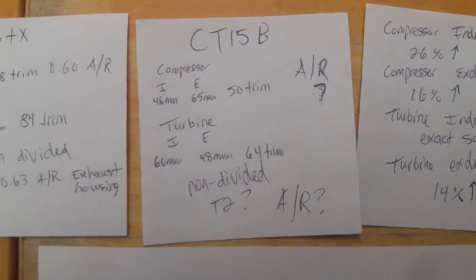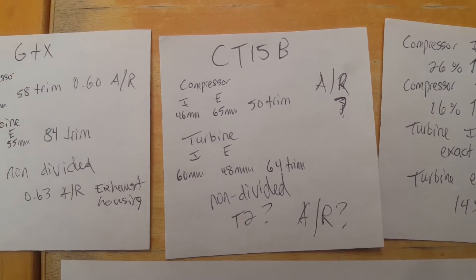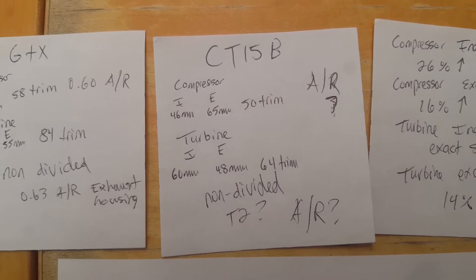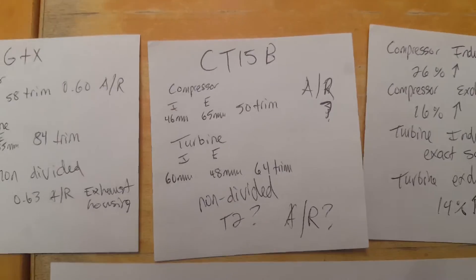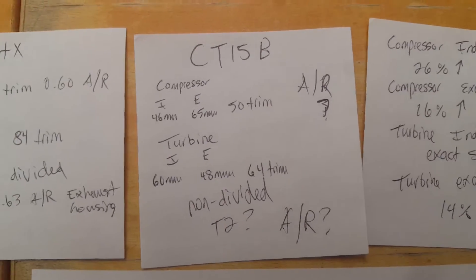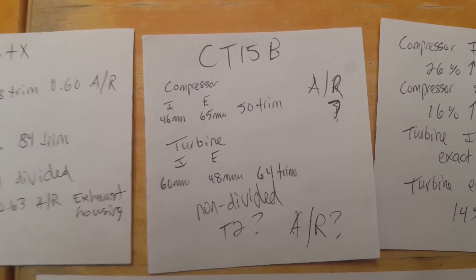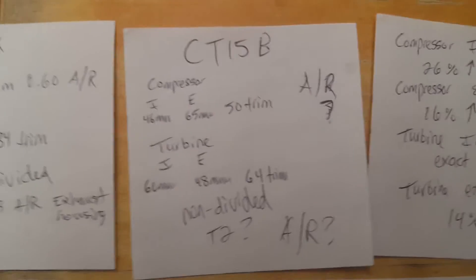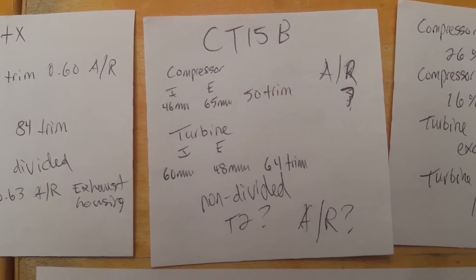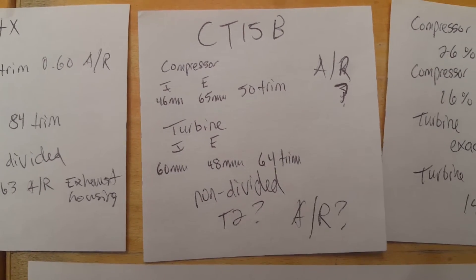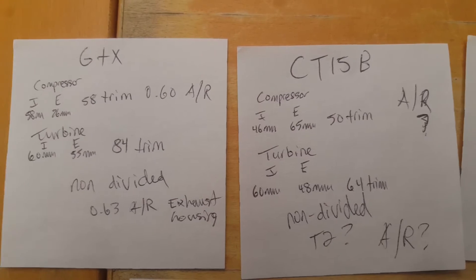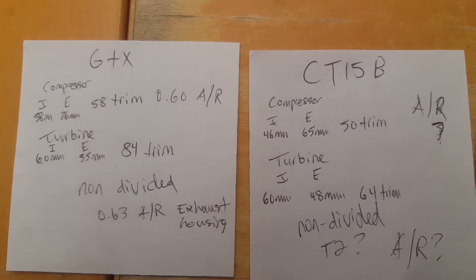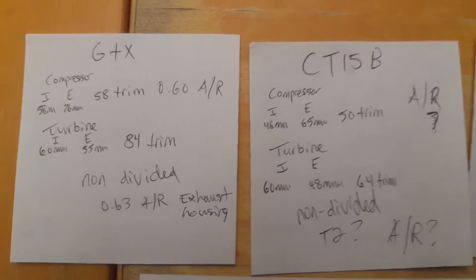The factory turbo is a CT15B. The inducer is 46 to 65, a 50 trim. I can't find any ARs on this. I know it's a T2 flange, but it's like a circular Toyota specific flange. A lot of people cut them off and weld T3 flanges on there. The turbine is 60, 48, which is a 64 trim.